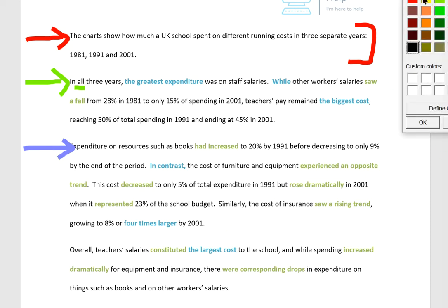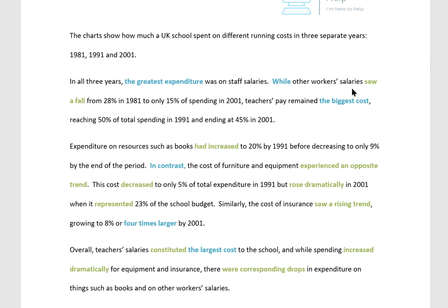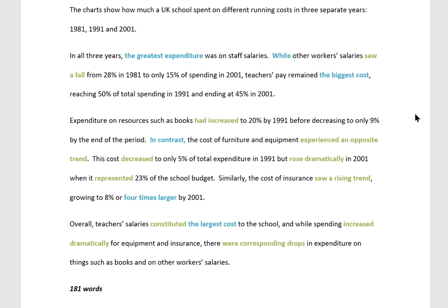And we finally come to the last paragraph. Are you still reading and speaking with me? Overall, teacher salaries constituted the largest cost to the school. And while spending increased dramatically for equipment and insurance, there were corresponding drops in expenditure on things such as books and on other workers' salaries. Notice this was 181 words — perfect.